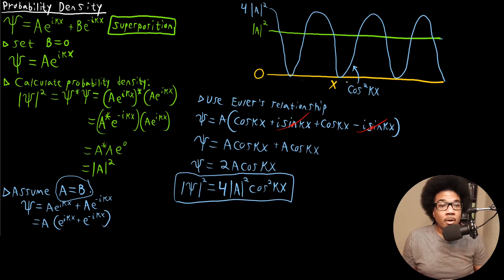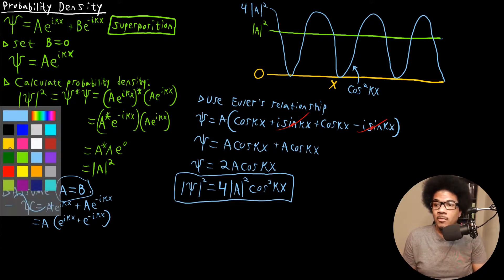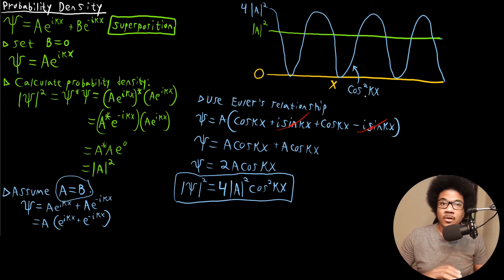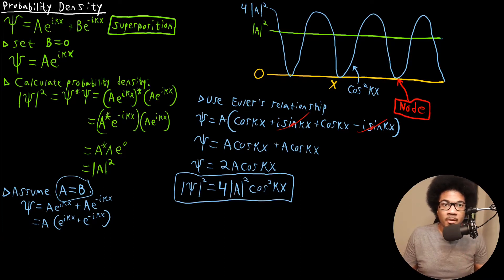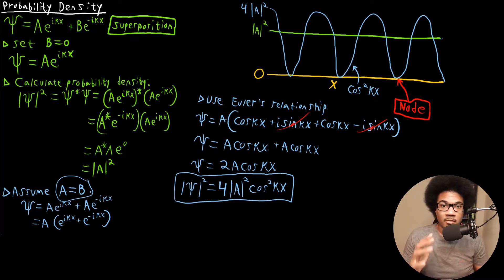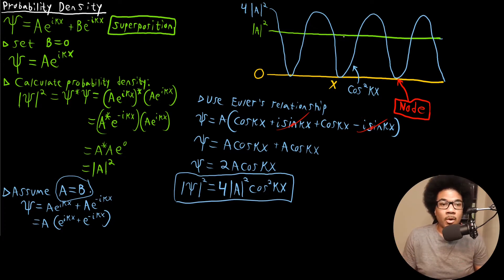One important feature to point out: this probability density has portions where it equals zero — where the wave function crosses zero. At those points there is no probability of finding the particle at that location. We call those nodes. A node is anywhere the probability of finding the particle is zero, a point where the wave function crosses zero. These will be very interesting features to identify for any system we look at.